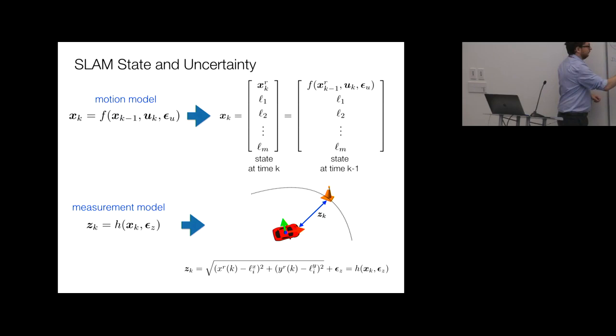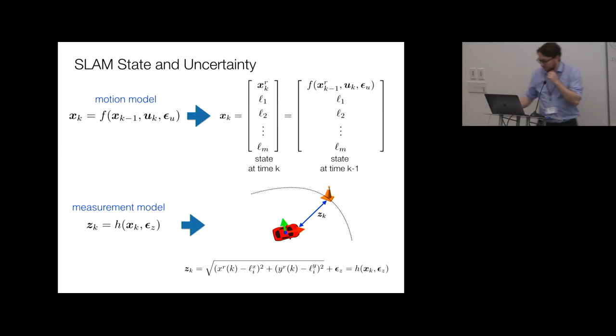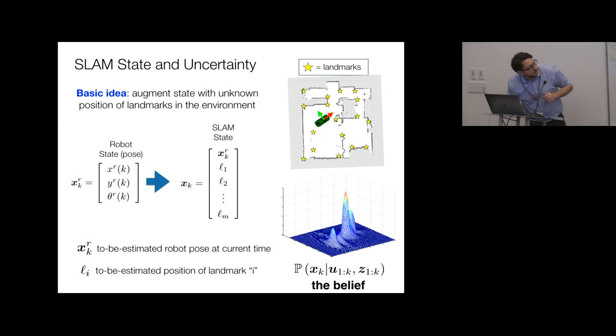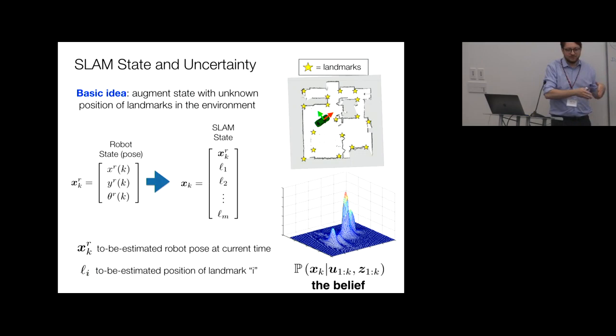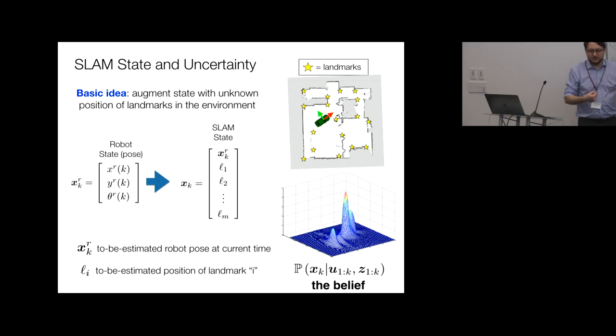Regarding the belief formulation: you condition on u and z because both are measurements — one from the IMU, one from the camera — and including independent measurements improves your estimate. You can treat u as an input or as a proprioceptive measurement; either way, these are two sources of information you want to use. In SLAM, since you don't know anything initially, you set the initial state to position zero.